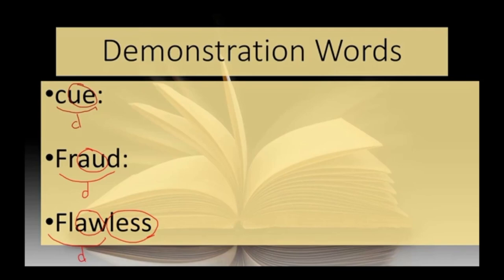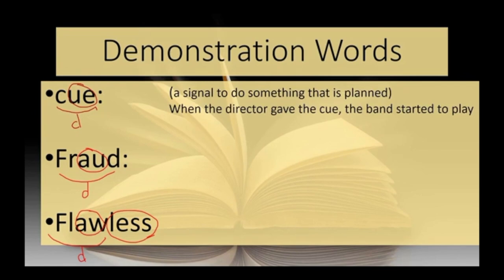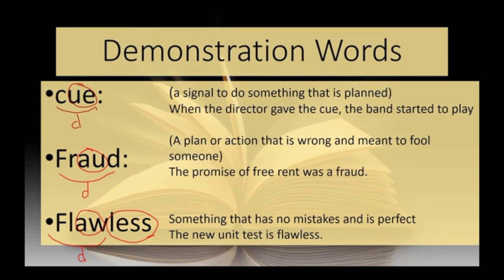We're going to go over the meaning of each word and I'll give you a sentence — try to come up with your own. For cue: it's a signal to do something that is planned. 'When the director gave the cue, the band started to play.' For fraud: a plan or action that is wrong and meant to fool someone. 'The promise of free rent was a fraud.' For flawless: something that has no mistakes and is perfect. 'The new unit test is flawless.'